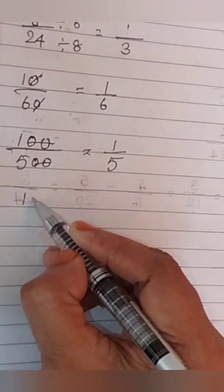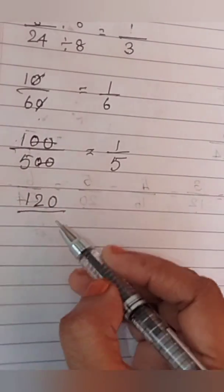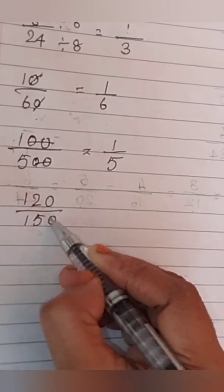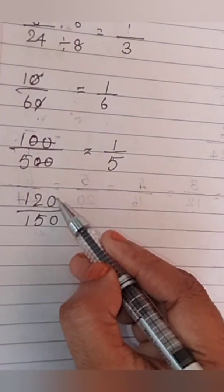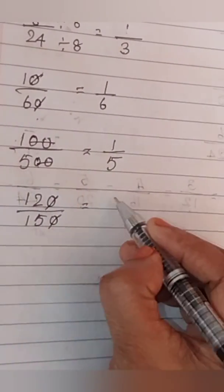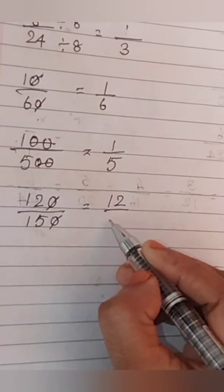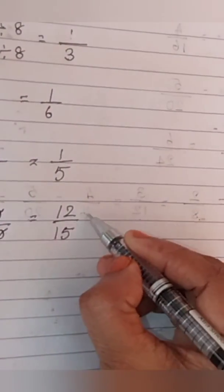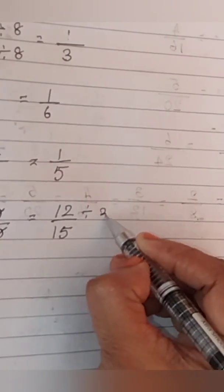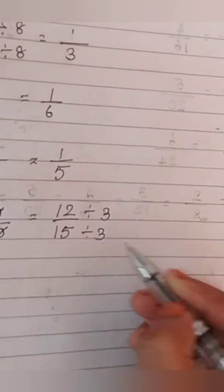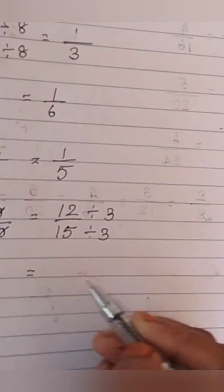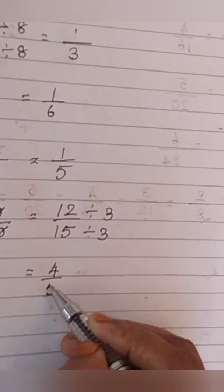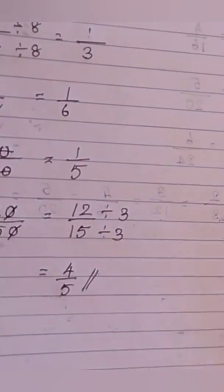Next question, 120 divide by 150. There are 0 in the numerator and denominator. I cancelled it. Now, I got 12 by 15. Now, we can find a common factor to divide this. Let us take 3. So, we can divide this both by 3. 3 4s are 12 and 3 5s are 15. So, our answer will be 4 by 5.